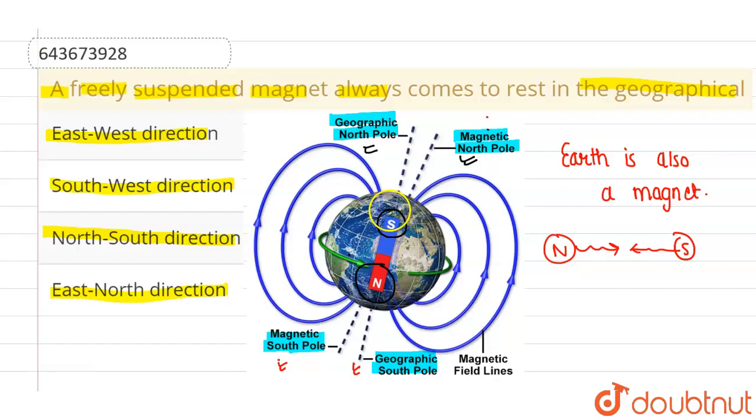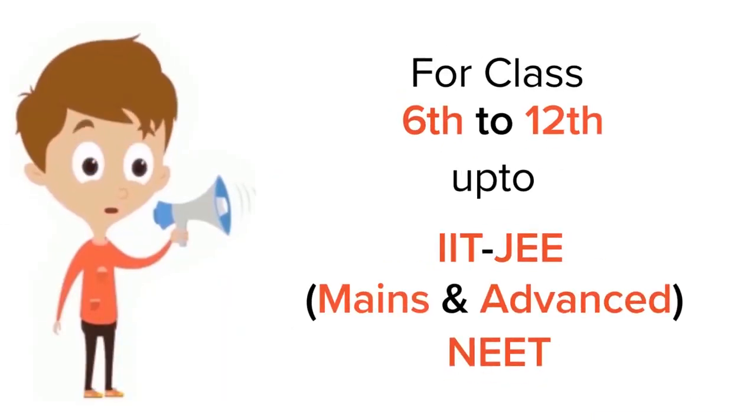So this whole magnet, or a freely suspended magnet, will come to rest in the geographical north-south direction. So option 3 is correct, and all other options are incorrect. I hope you understood. Thank you. For class 6-12, IIT JEE, and NEET level, trusted by more than 5 crore students, download Doubtnet app today.